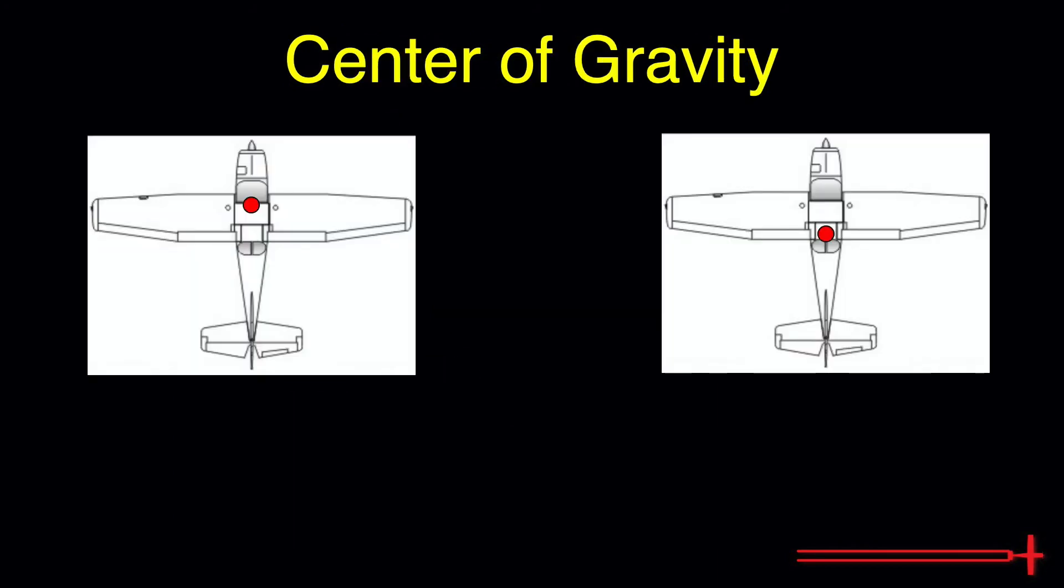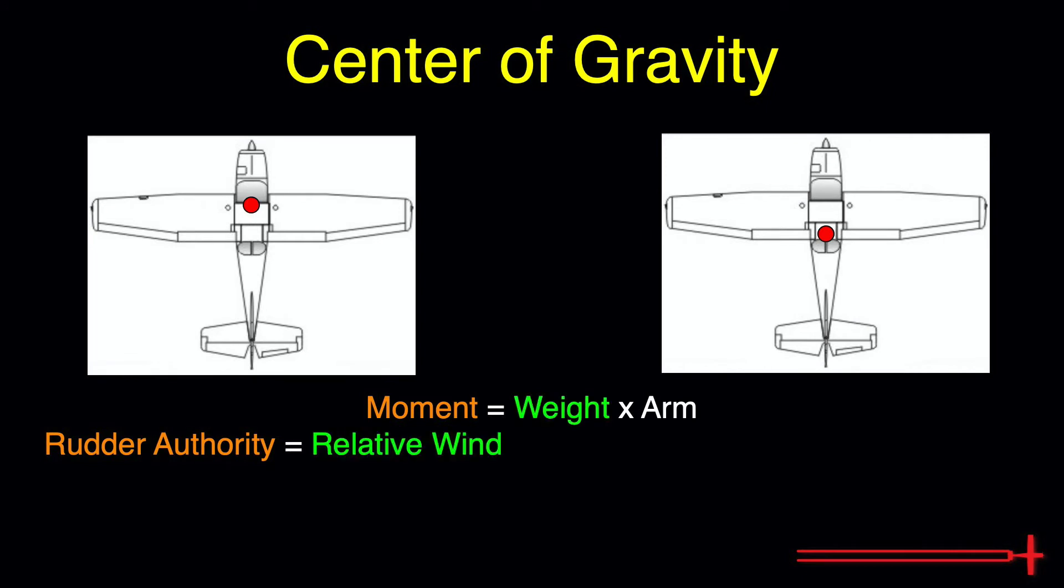Let's illustrate why rudder authority decreases using a familiar formula. Moment equals weight times arm. In this example, we will say that rudder authority is our moment, the force of the relative wind on our rudder is the weight, and the distance between CG and the rudder is our arm.